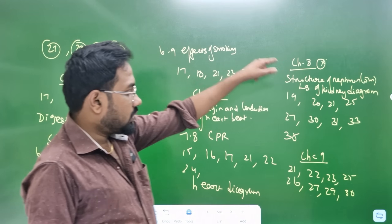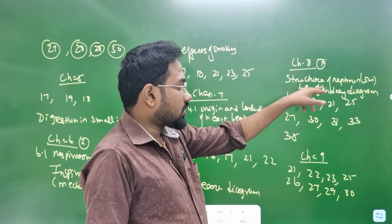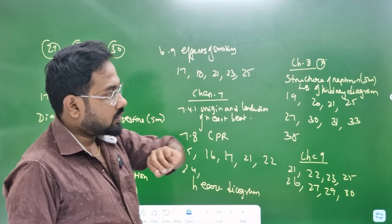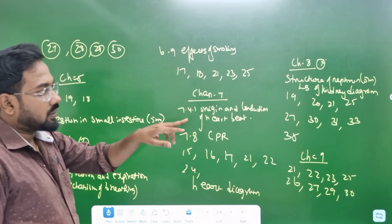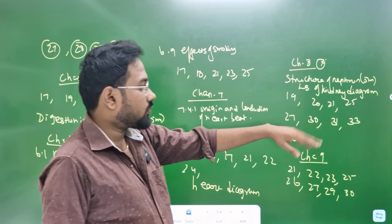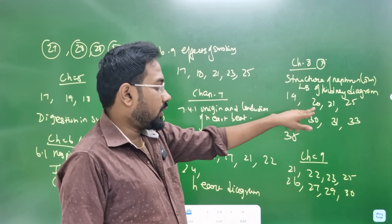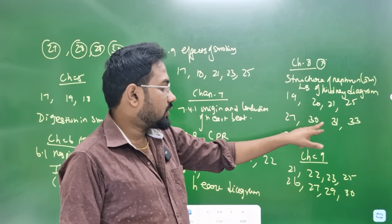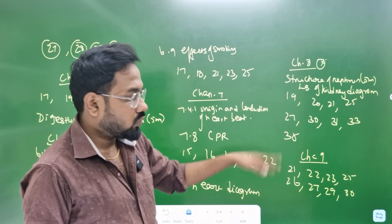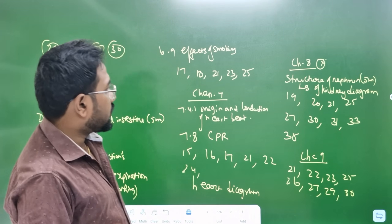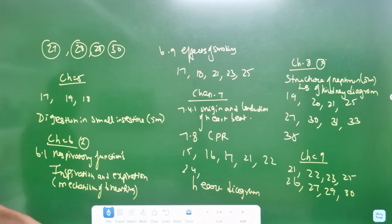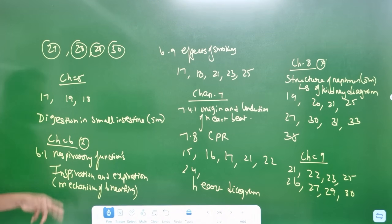Chapter 8 — structure of nephron. Nephron structure — 5 marks. LS of kidney — kidney diagram. Sections 19, 20, 21, 25, 27, 30, 31, 33 — this is 2 marks. Chapter 8 and Chapter 6.